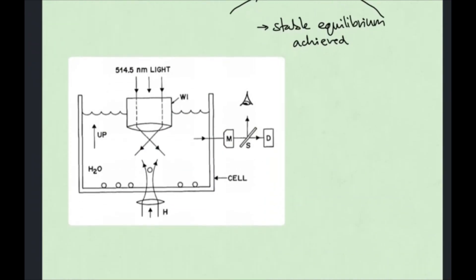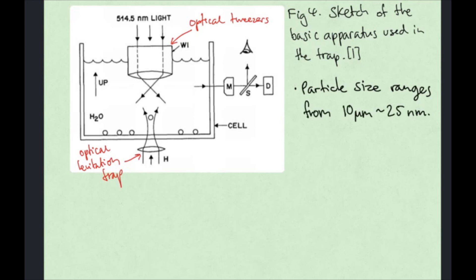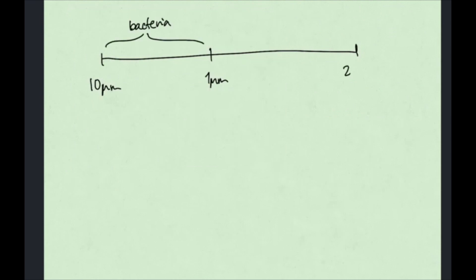This was Ashkin's experimental setup, taken from his paper in 1986. A bead would be introduced into the tweezer by optical levitation. He demonstrated it was possible to trap particles with sizes ranging from 10 micrometers to 25 nanometers. This range includes large particles like bacteria and much smaller submicron particles.